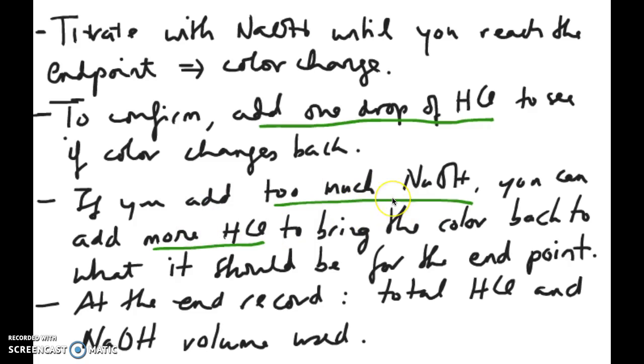Now if you add way too much NaOH you're going to get a very purple color and that's okay. You can always do something called back titration which is basically to add more HCl to neutralize whatever excess NaOH you've added to bring it back to the endpoint. But the only thing you have to be careful about is you have to keep track of how much HCl you actually add so that you can subtract that from the total NaOH.